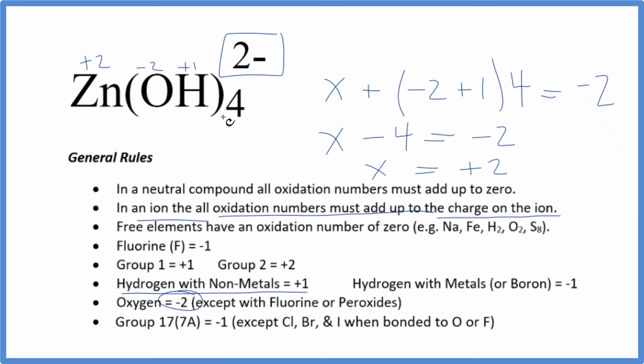So to recap, what we did was we wrote the elements that we knew, and then we knew that all of these oxidation numbers here had to equal the charge on the ion. We set an equation up and then just solved for x.